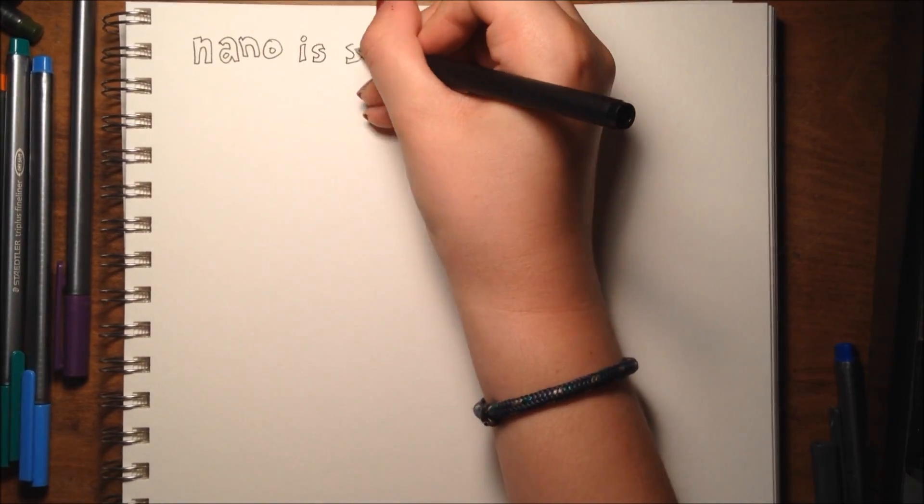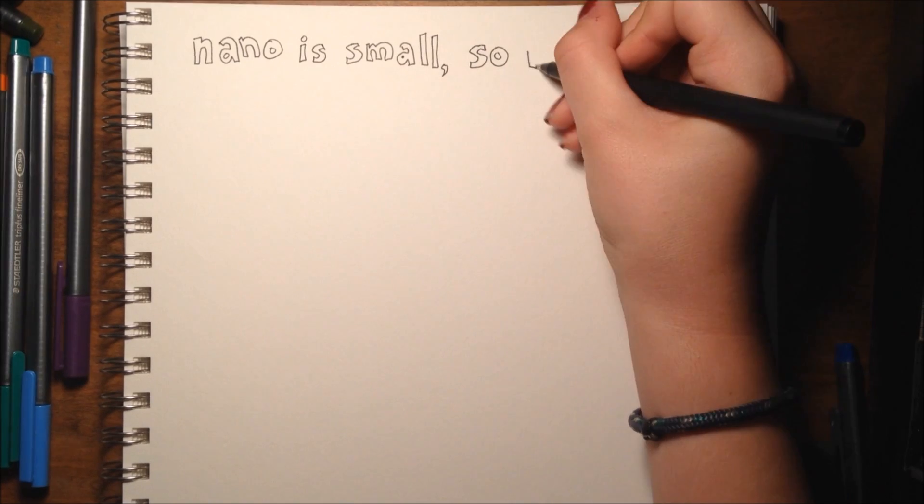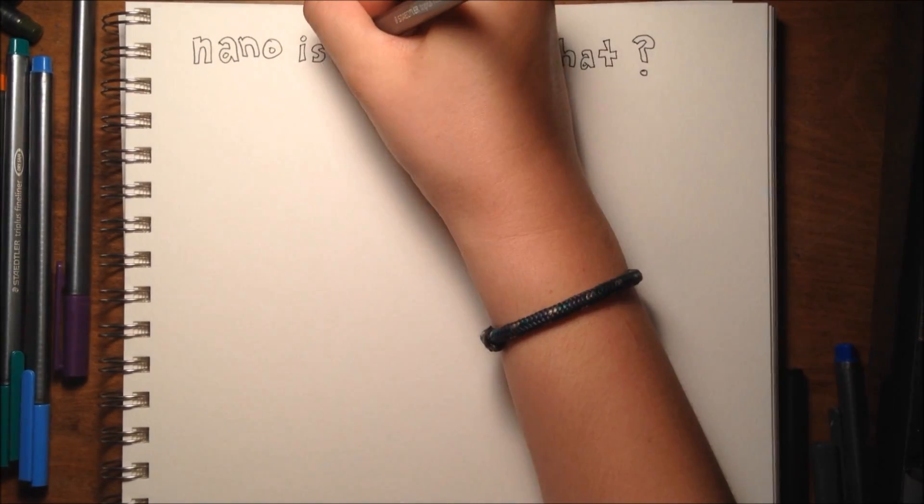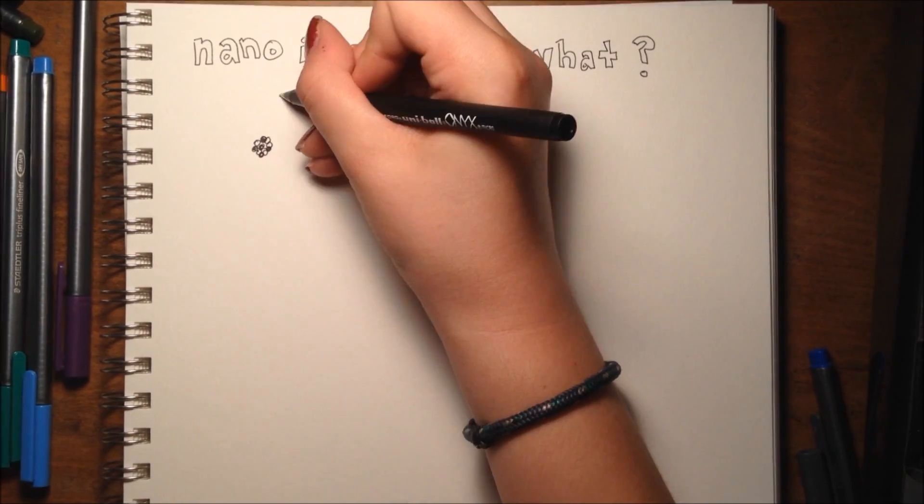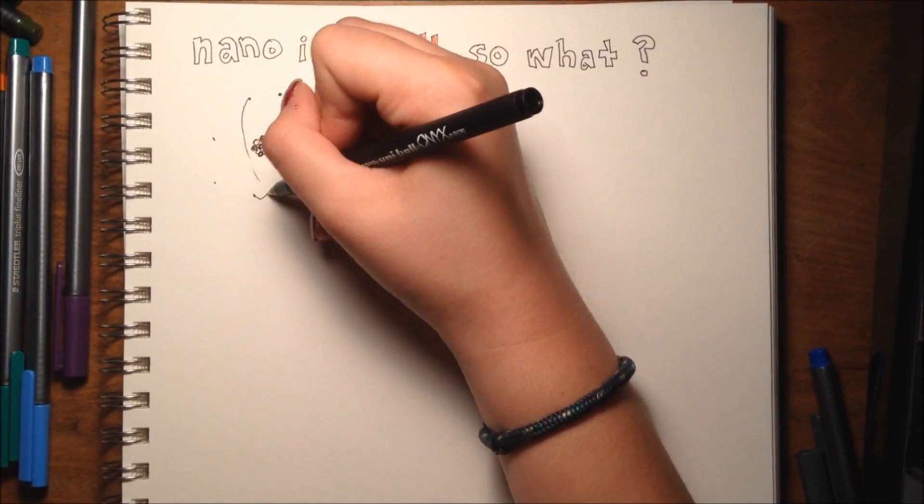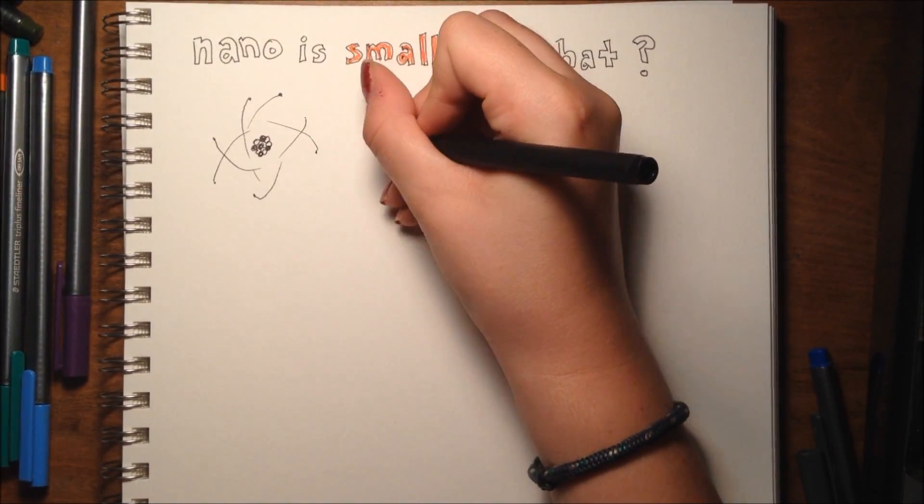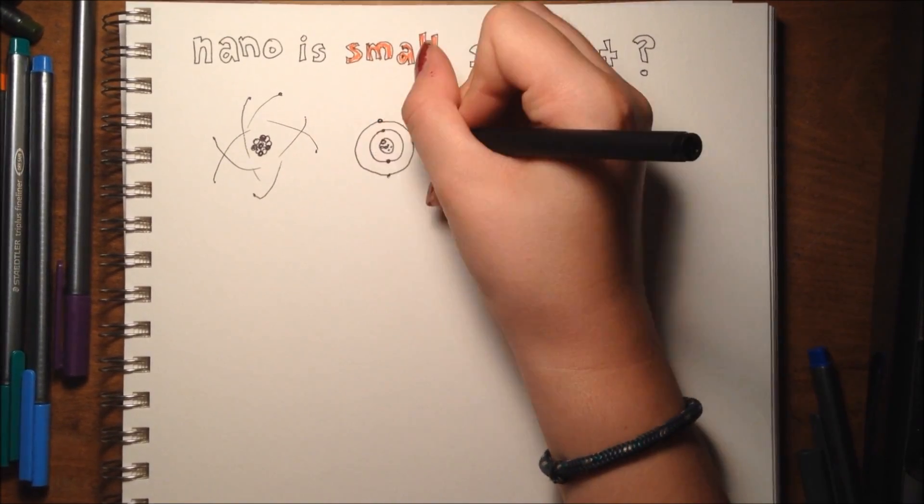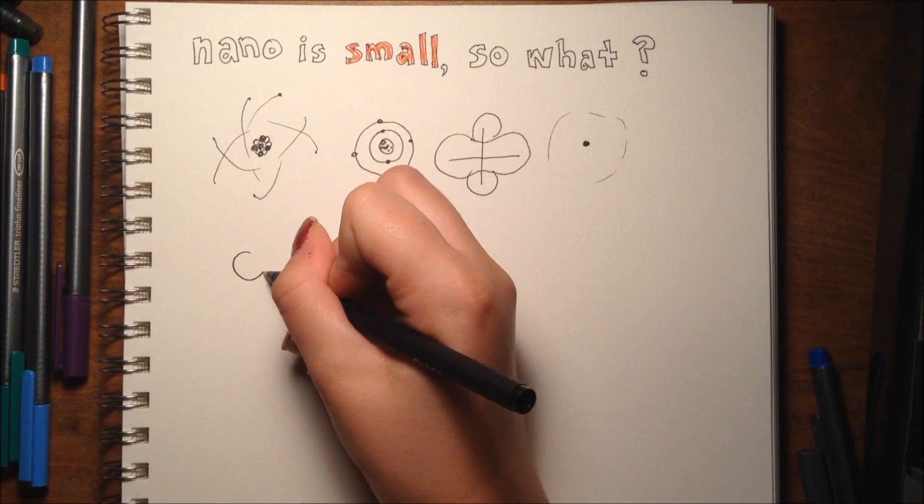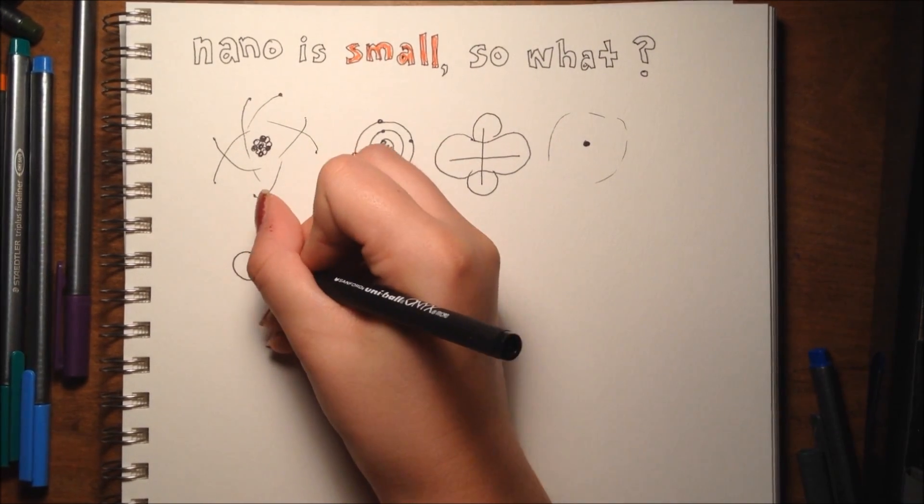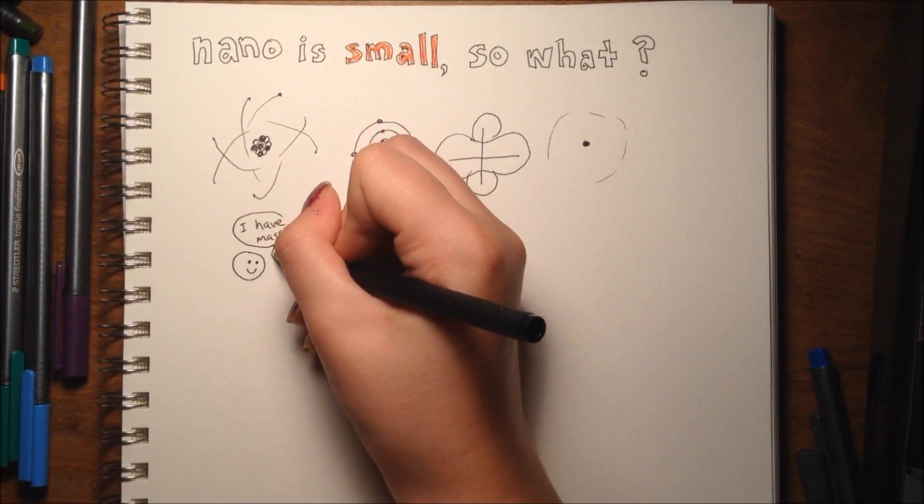Now that we have an understanding of the size of nano, why does it actually matter? Over time, we've gained a better understanding of the structure of atoms and how they interact, which is a big part of what allow us to manipulate things on the nanoscale today. In addition, we have an understanding that when things are very small, different forces are dominant.